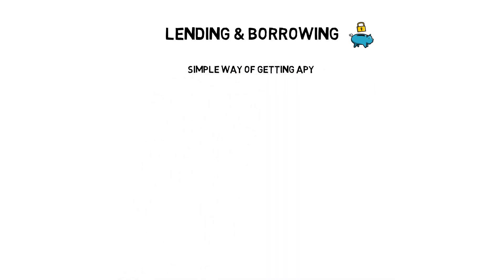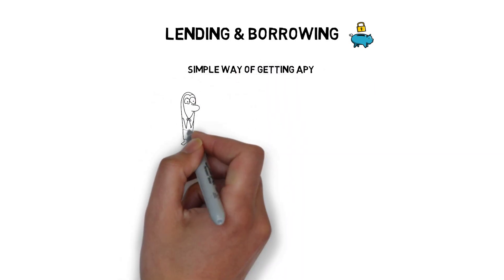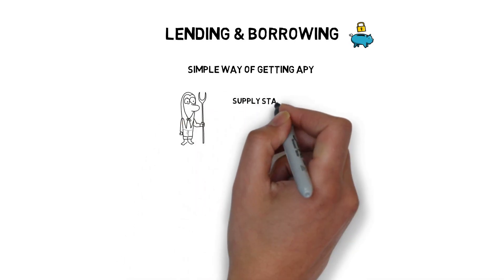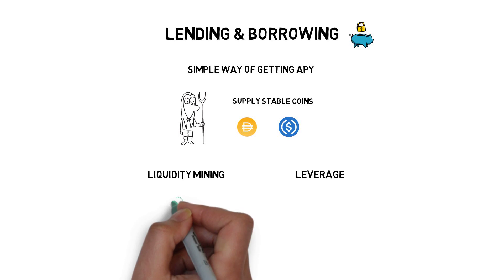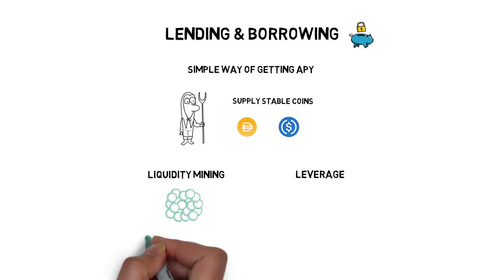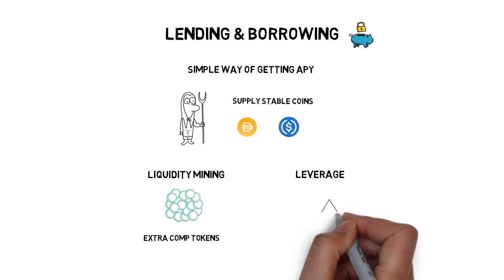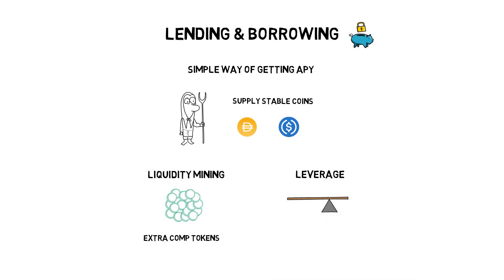Lending and borrowing is a fairly simple way of getting APY on your capital. Farmers can, for example, supply stablecoins such as DAI or USDC on one of the lending platforms and start getting a return on their capital. Liquidity mining and leverage can supercharge that — farmers can get rewarded with extra COMP tokens for lending and borrowing on Compound, and they can also borrow funds with their collateral to buy even more coins. This comes, of course, with a risk of potential liquidations.